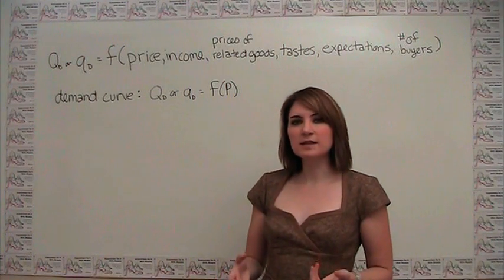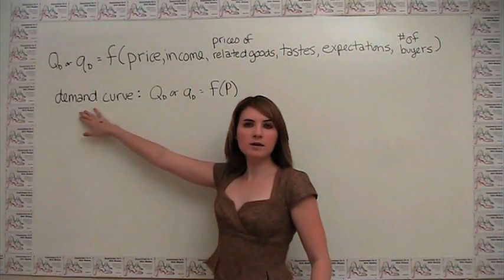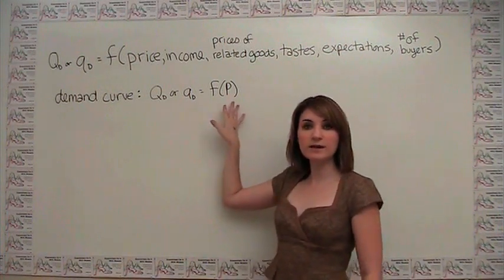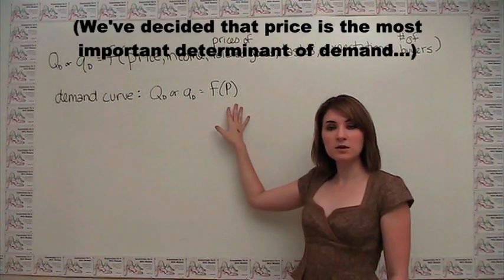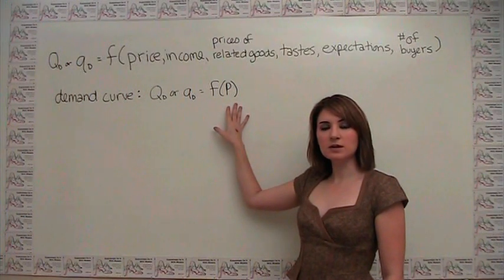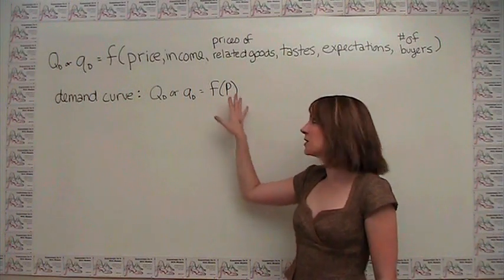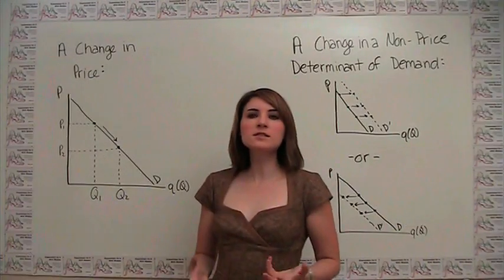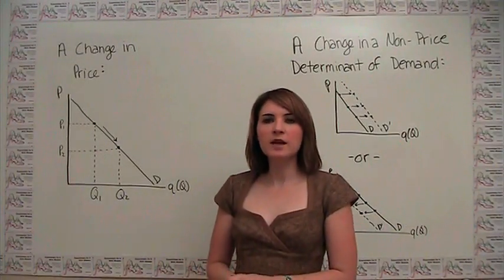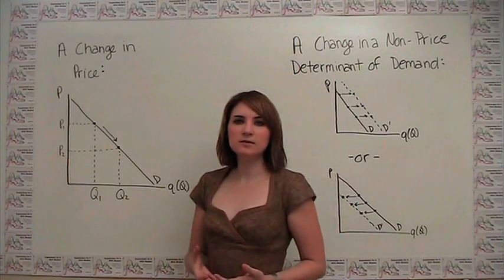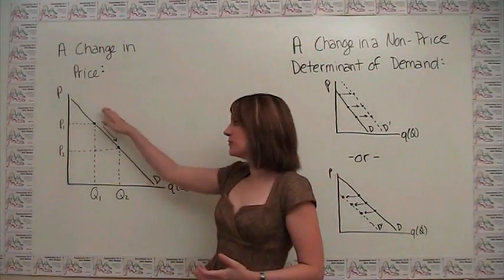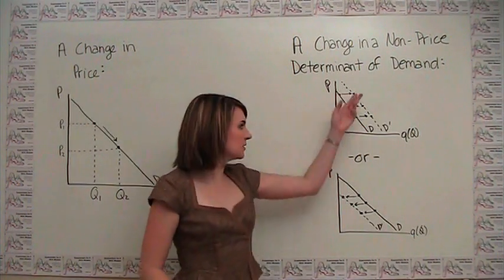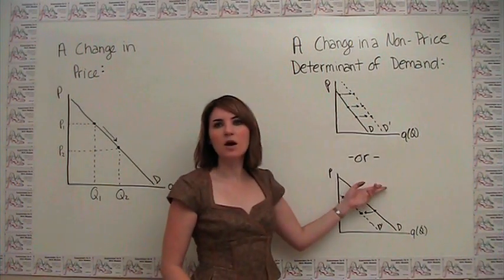So what do we do instead? We say, well, when we plot our demand curve as we saw earlier, we're just plotting quantity as a function of price by itself. So what we're doing in order to accomplish this is we're holding all of the other determinants of demand constant. Because of the limitations of our two-dimensional graph, it becomes important to distinguish between what happens graphically when we have a change in price and what happens graphically when we have a change in something other than price.